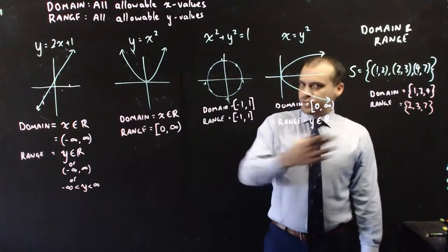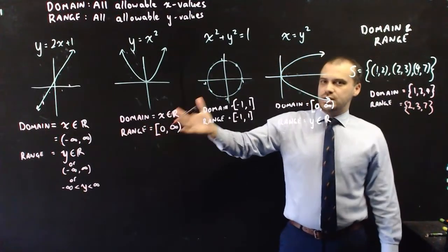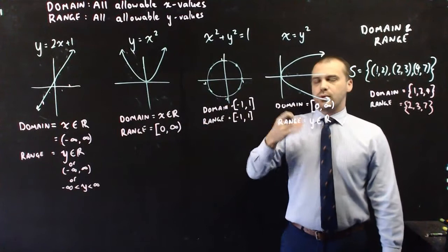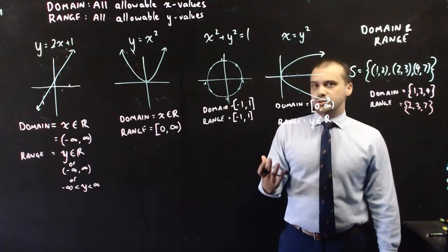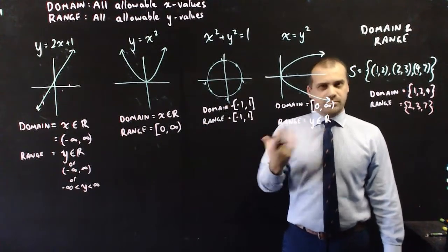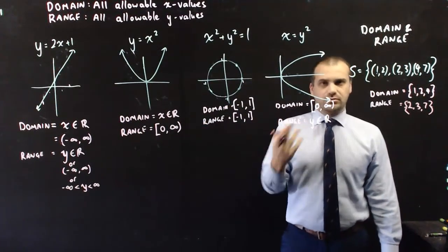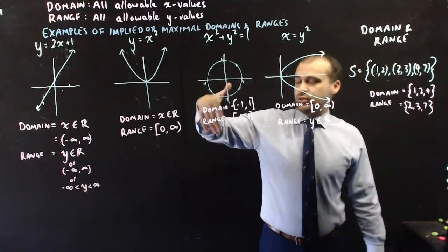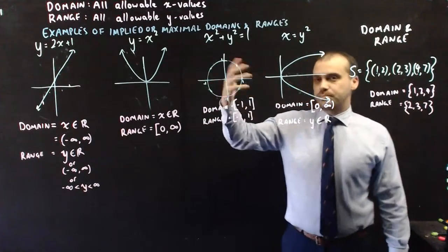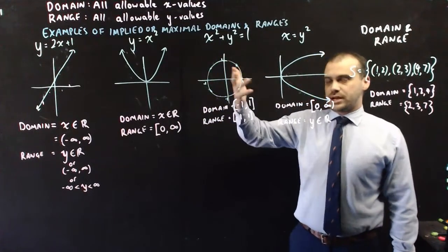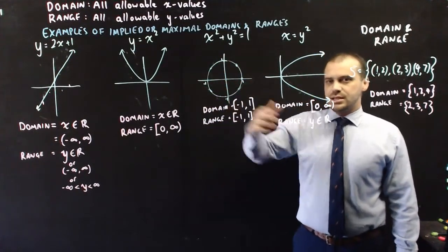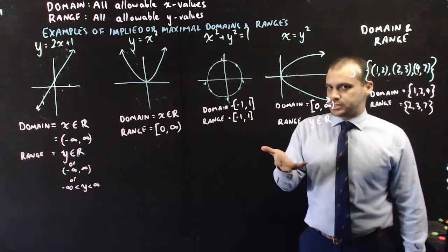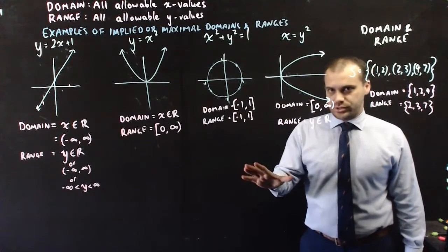Everything we've looked at in here is called an implied or maximal domain and an implied or maximal range. It's not always the case that they will be implied or maximal domains. Sometimes they are explicit domains. Let's look at those.